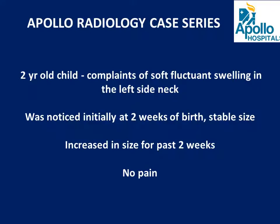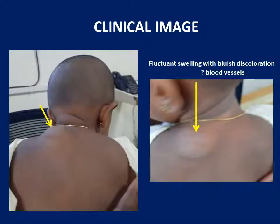Good morning everyone, welcome to Apollo Radiology Cases. Today we'll be discussing a two-year-old child who came with complaints of soft fluctuant swelling on the left side of the neck. The swelling was noticed at two weeks of birth — not present at birth — and was stable in size with proportionate growth, with recent increase in size over the last two weeks. There was no complaint of pain or bleeding. On inspection, there appears to be some bluish discoloration, probably from blood vessels.